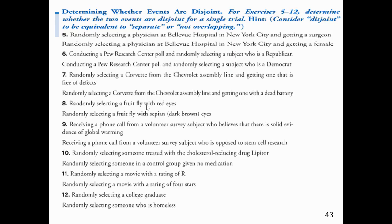Randomly selecting a movie with an R rating versus one with four stars — there could definitely be overlap, so not disjoint. Randomly selecting a college graduate versus someone who is homeless — while back in the day a college education made homelessness very unlikely, that's not the case anymore. There is overlap; you'll find college graduates who have fallen on hard times and are homeless, so these events would not be disjoint.